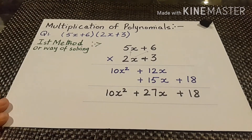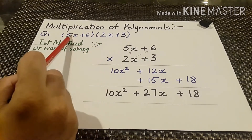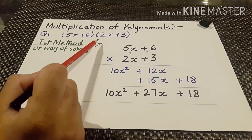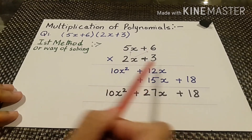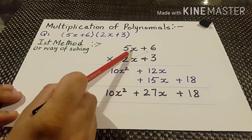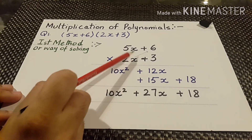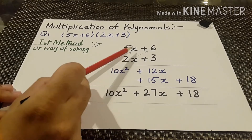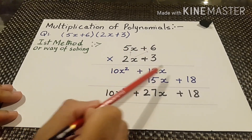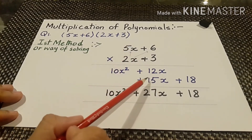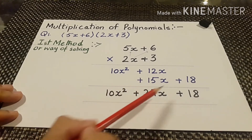Now how to multiply polynomials. Question number one: multiply 5x plus 6 by 2x plus 3. There are two methods. In the first method, we write the polynomials vertically: 2 times 5x gives 10x, and x times x — bases are the same so powers are added — gives x squared. So 2 times 5x gives 10x squared. Then 2 times 6 gives plus 12x. Coming down: 3 times 5x gives plus 15x, and 3 times 6 gives plus 18.